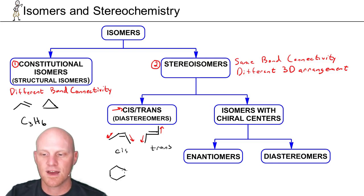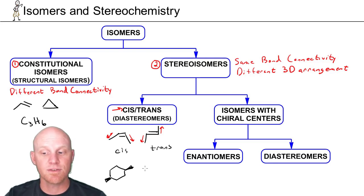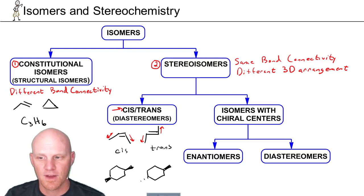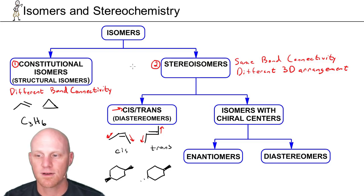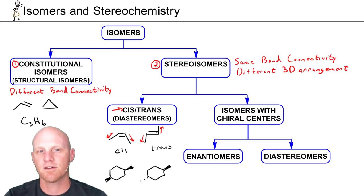We can also see this in cycloalkanes, like in cyclohexane. If you have two substituents coming off your cyclohexane — whether they're two identical methyl groups or two different substituents — if they're on the same side, both wedges or both dashes, that's cis. But if one's a wedge and one's a dash, they're on opposite sides and that's trans. Cis-trans isomerism is another example of stereoisomers: same bond connectivity, different three-dimensional arrangement of the atoms.